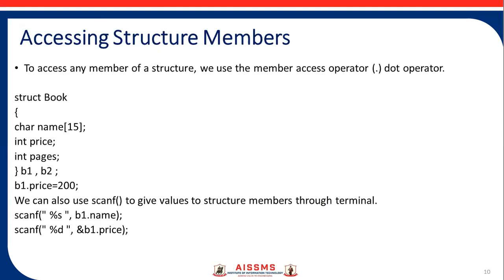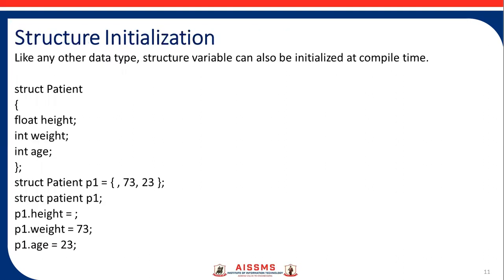Accessing structure members: to access any member of the structure, we use the member access operator — that is, the dot operator. Using the dot operator, we access the member variable. For example, with structure book having members name, price, and pages: v1.price = 200. We can also use the scanf function to give values to structure members through the terminal, as in v1.name and v1.price. That is how we access structure members using the structure variable.